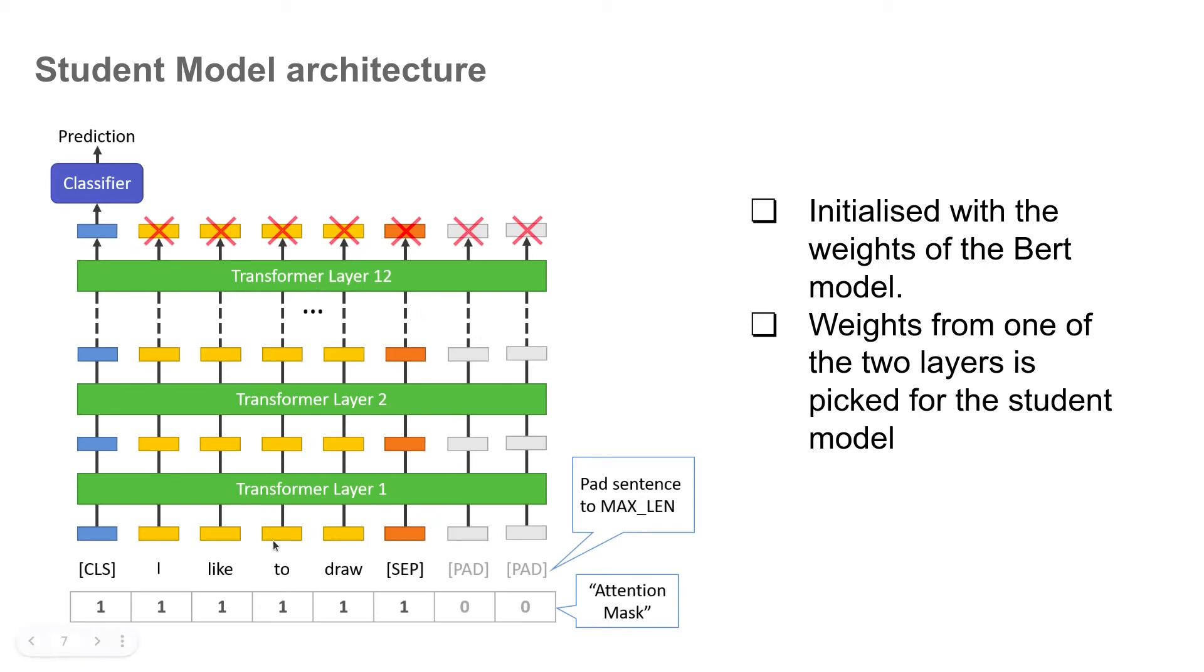So if this is the original BERT model with 12 layers, then in our student model we will have six layers, and the first layer in that will have weights taken from either of these two layers. And the second will have the weights taken from either the third or the fourth layer, and so on.